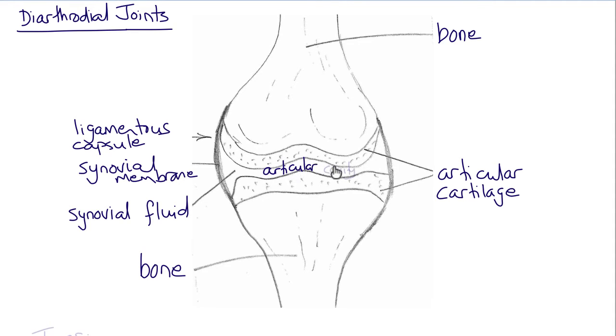And the space between the cartilage is called the articular cavity. The synovial fluid and cartilage allow for a very low friction joint.